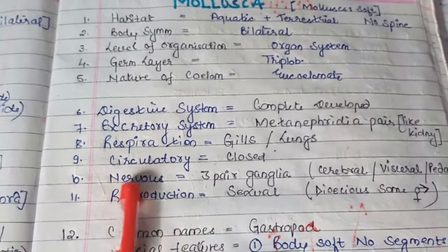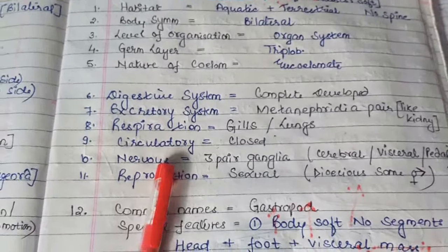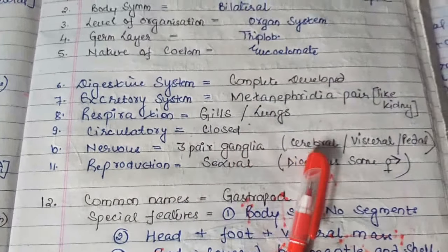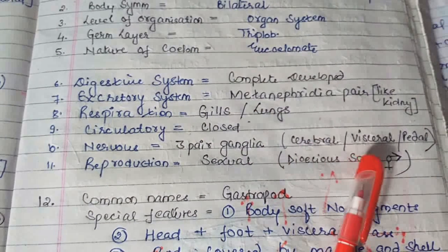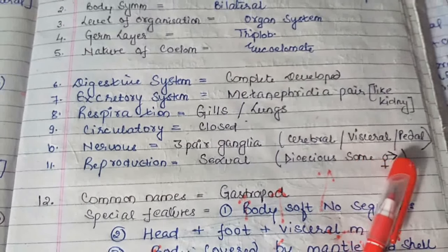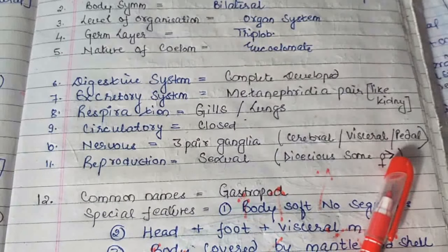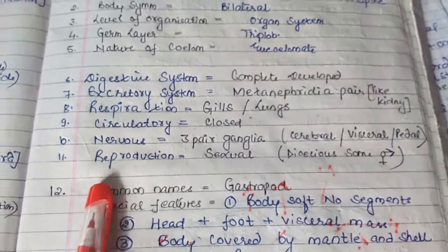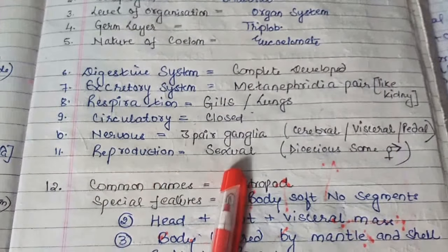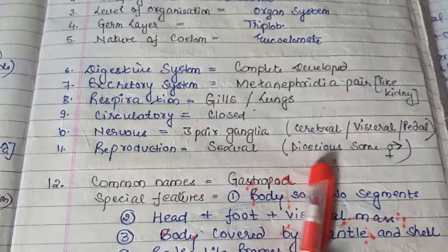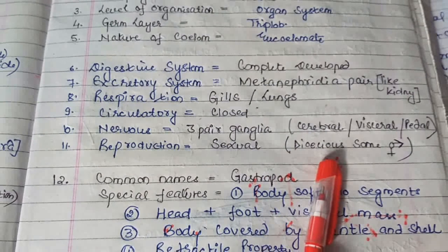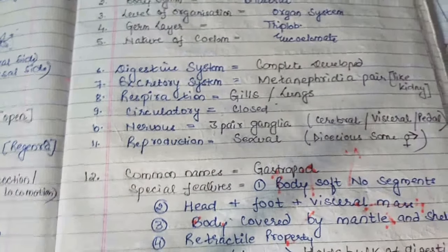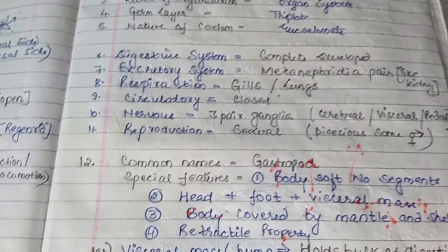Regarding ganglion nerves, three pairs of ganglia are found — on the cerebral region, visceral region, and pedal region — which help in message signaling. Reproduction: it is sexual. They are dioecious in nature, meaning they are bisexual.